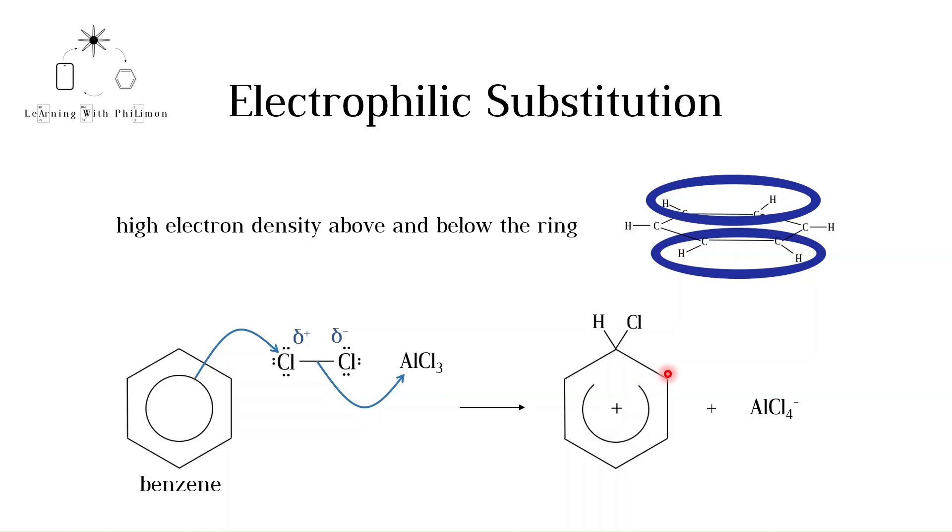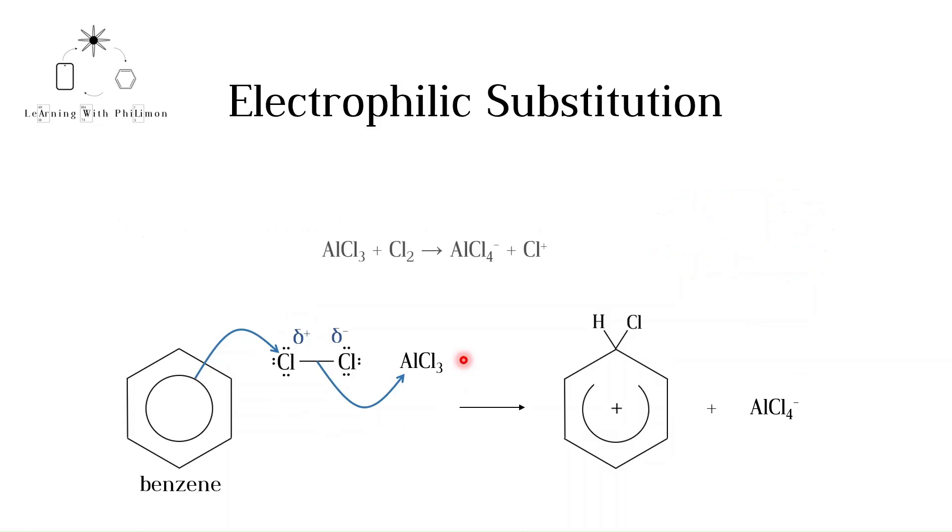In the IB course, you do not need to show how the electrophile is formed. However for completion, I am including the equation showing the formation of the electrophile. Note that an electrophile is a species, often with a positive charge, that is attracted to electrons. In the IB, you can simply draw the benzene ring reacting directly with the electrophile. In this case, the positive chlorine ion.